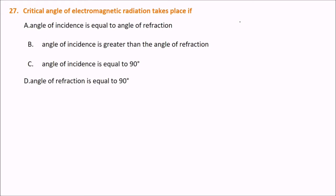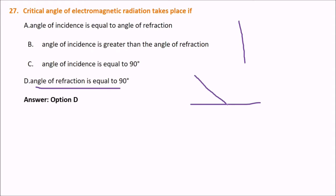The next question: critical angle of electromagnetic radiation takes place if — the answer is the angle of refraction is equal to 90 degrees. When light or electromagnetic radiation travels through a medium and the medium changes, they refract. Once the refraction angle equals 90 degrees, that is called the critical angle, and at that point it will reflect rather than refract further.